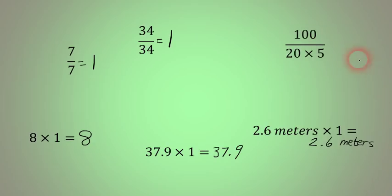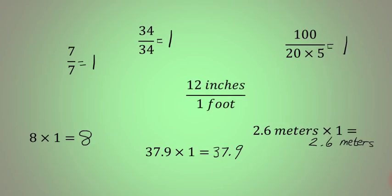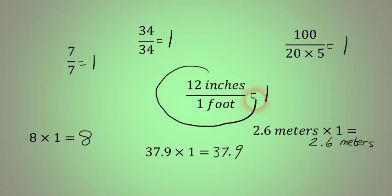And the same thing over here: 20 times 5 is the same thing as 100, so that fraction is also equal to 1. And that fraction as well — 12 inches is the same thing as 1 foot, so we can say that it is equal to 1 in value. Essentially what we're going to be doing in this lesson is taking a value and multiplying it by 1, but the 1 that we multiply by will look something like that, so we can change the unit without changing the value.